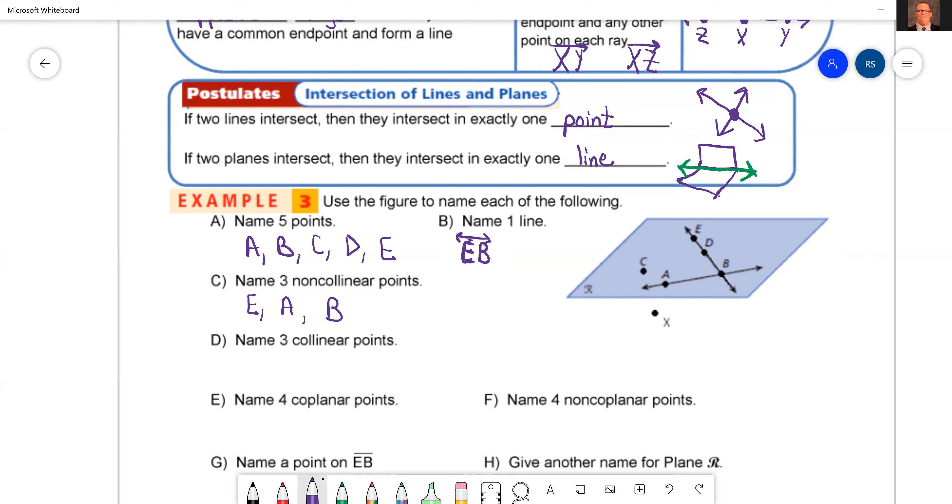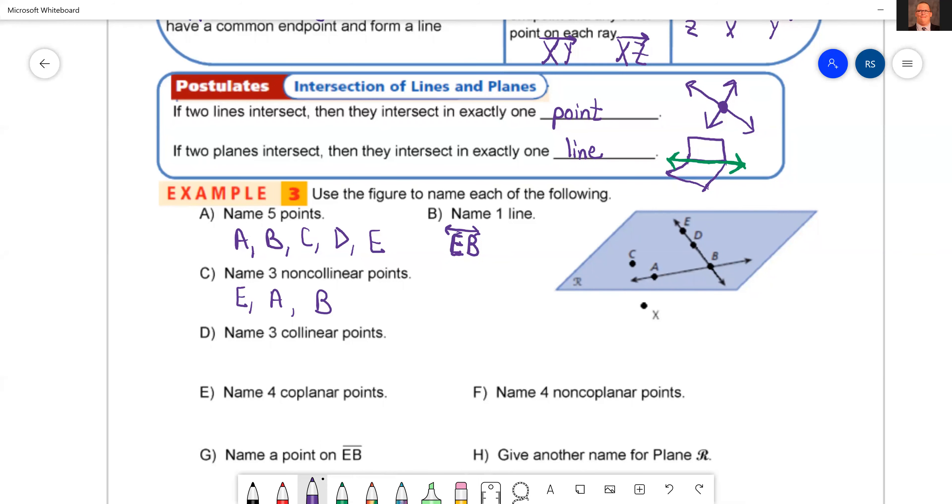Now it does ask for three collinear points. So we do want them to be on the same line. Three points on the same line. This one only has one answer. The only one that's got three collinear points is E, D, B.